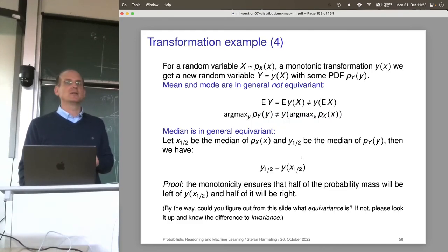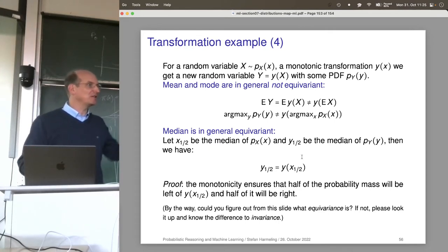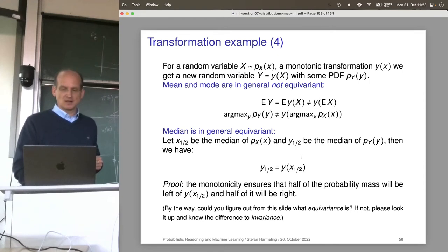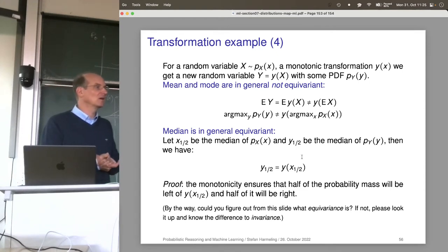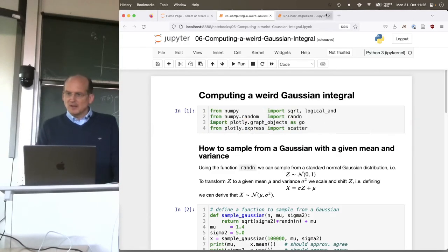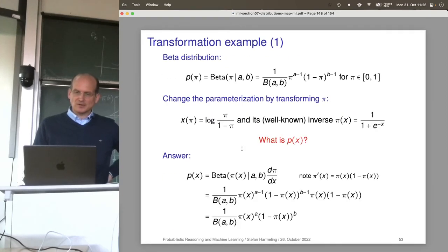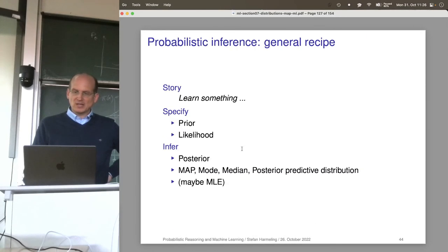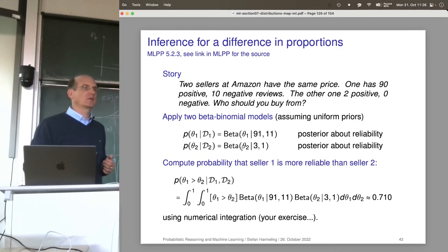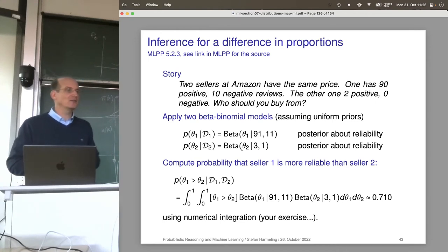End of section 7. Any questions about transformation of variables? The exam skill here is: given a density and a transformation, do the calculation — showing you know the transformation rule. We don't have code for the transformation of variable material, but we do have a notebook for the online seller example from last time.